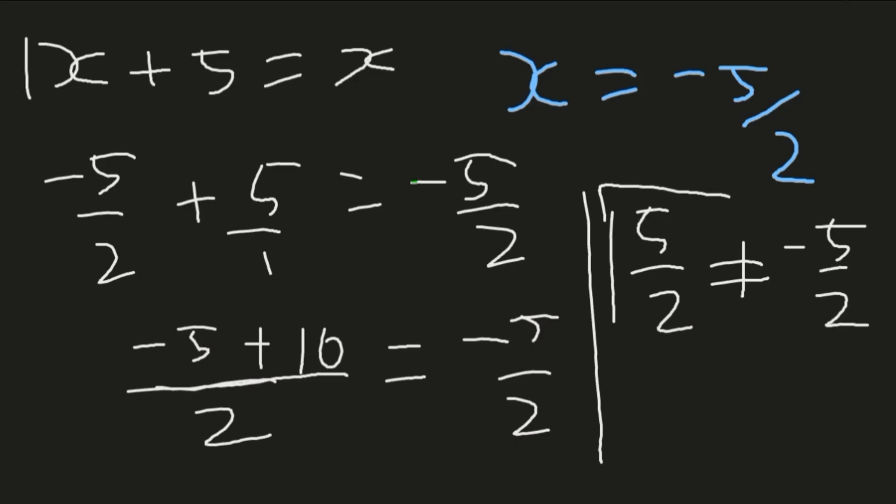Now 5 over 2 is not equal to negative 5 over 2, which tells us that the value of x does not exist. Because we've got that 5 over 2 is not equal to negative 5 over 2, meaning the value of x does not exist for this problem. This is basically how you handle such a case. If you've enjoyed our presentation, kindly consider liking the video, commenting, and most importantly, subscribing to our channel so that you can receive such amazing content. Thank you for watching.